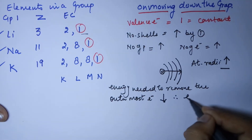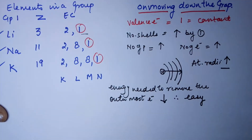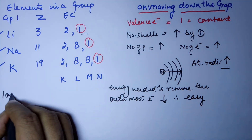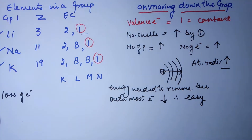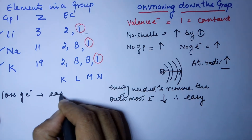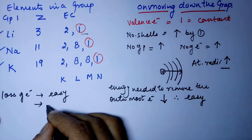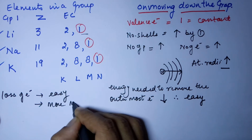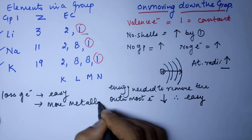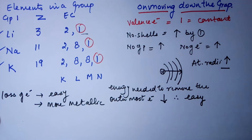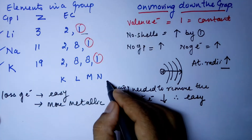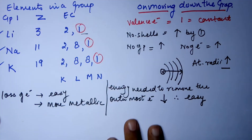Therefore, electron removal becomes easier. If the electron removal is easy, then loss of electrons on moving down the group becomes easy. Hence, it becomes more metallic as you move down the group. If the electron loss is easier, then the element becomes more metallic.